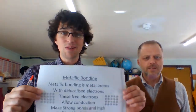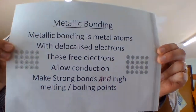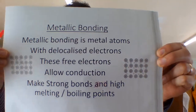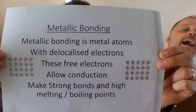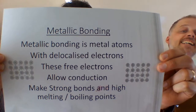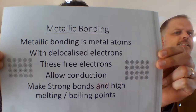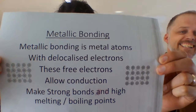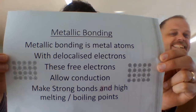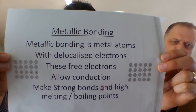Hello! Today's video is on metallic bonding. Metallic bonding is metal atoms with delocalised electrons. The free electrons allow conduction and make strong bonds with high melting and boiling points.